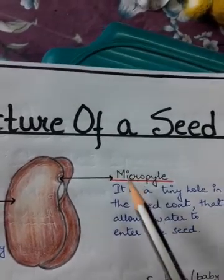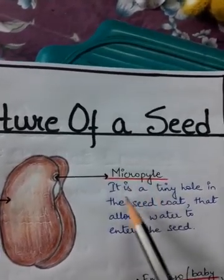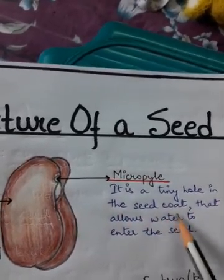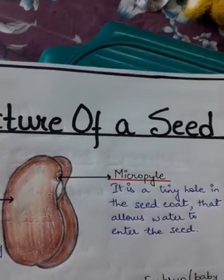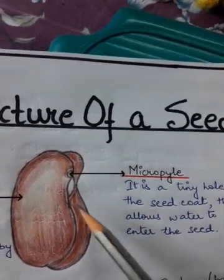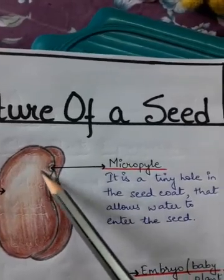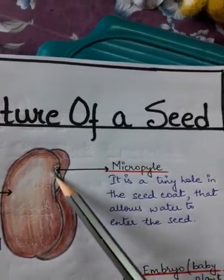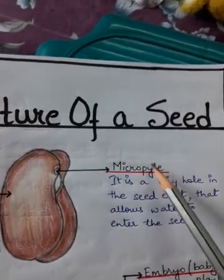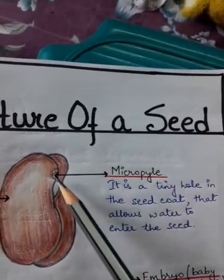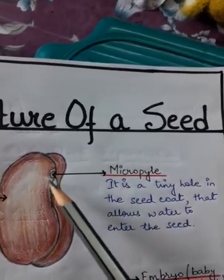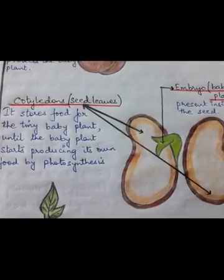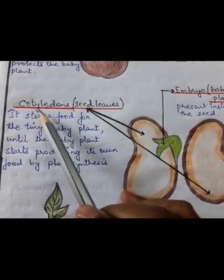Now let's look at the second part, the micropyle. It is a tiny hole in the seed coat — can you see the tiny hole here? This hole allows water to enter the seed. You can see it in all seeds; they all have a tiny hole from where water enters.